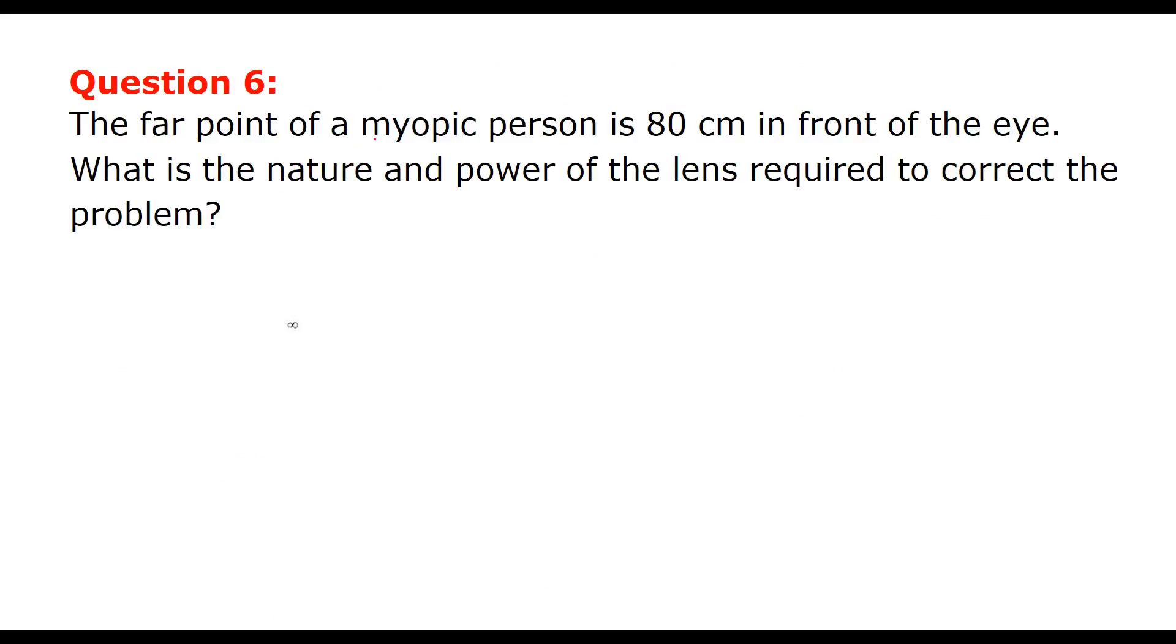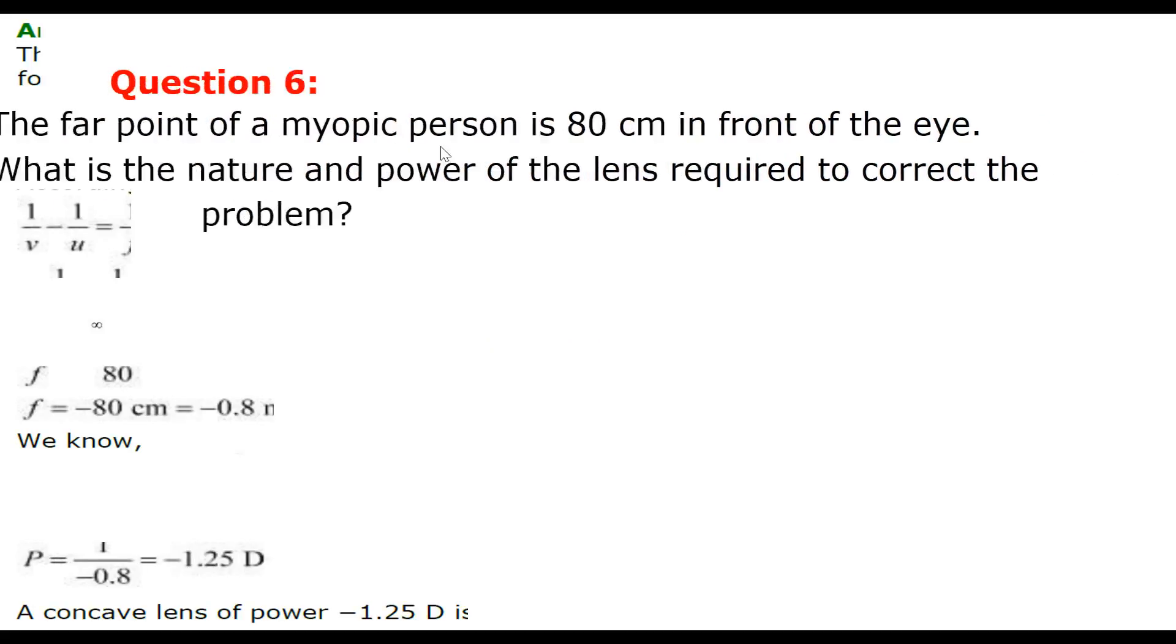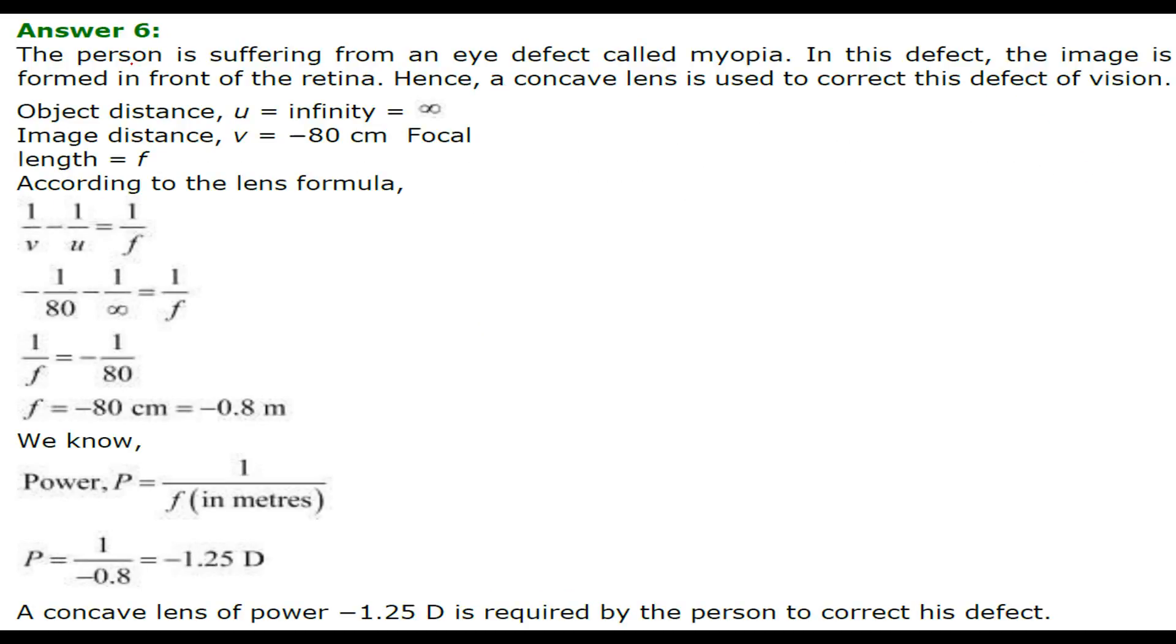The far point of a myopic person is 80 centimeter in front of the eye. The myopic person has the problem that he is not able to see distant objects clearly. The hypermetropia person will not be able to see the things which are closer to the eyes. What is the nature and power of the lens required to correct the problem? The person who is suffering from eye defect called myopia or myopic - in this kind of defect the image is formed in front of retina. So the concave lens is used to correct the defect of vision.